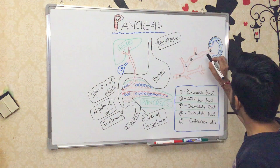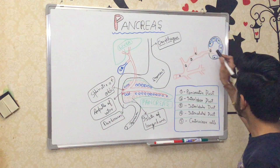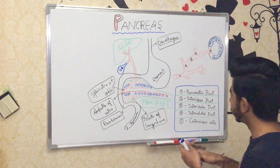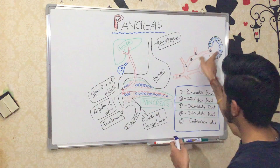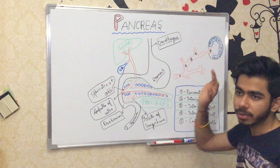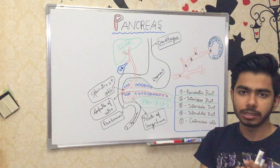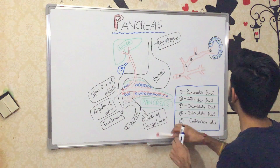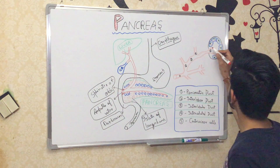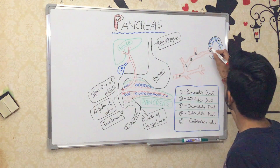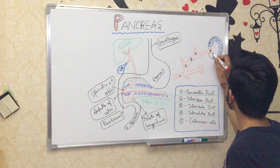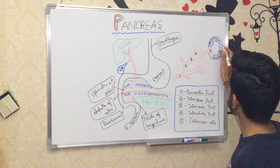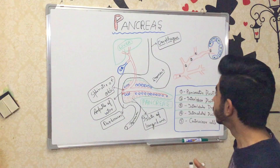From the intercalated duct, it continues into the centroacinar cells, which are present near the acinar cells. These are the centroacinar cells, and this is the epithelium layer.